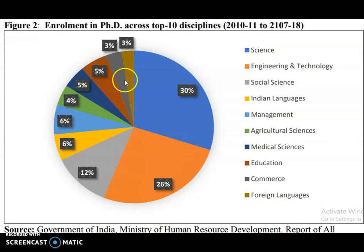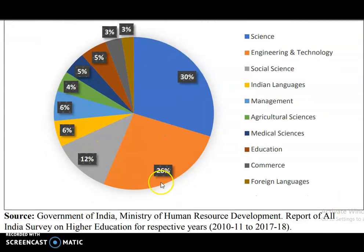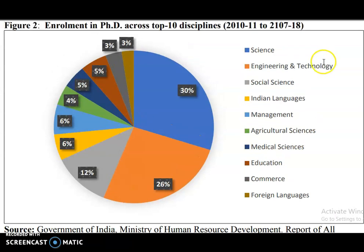From this pie chart we can understand which group has the highest enrollment in PhD and which groups have the least. This pie chart is provided by the Government of India — specifically the Ministry of Human Resource Development report of the All India Survey on Higher Education for the respective years from 2010-11 to 2017-18. Please don't forget to subscribe the channel and share it with your friends. Thank you.